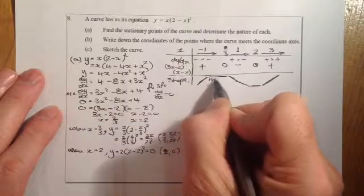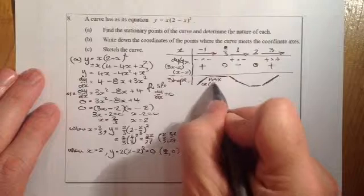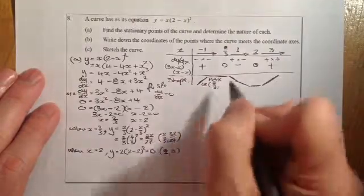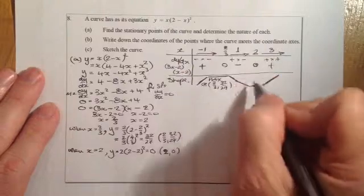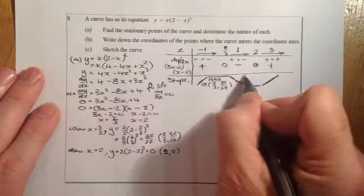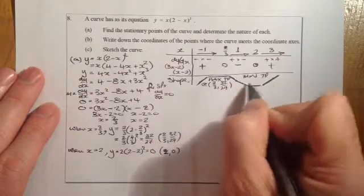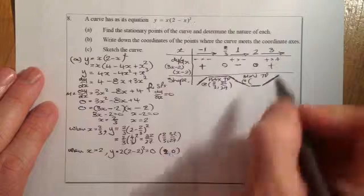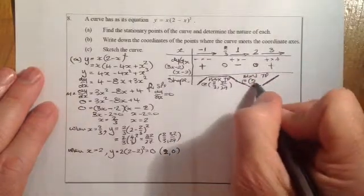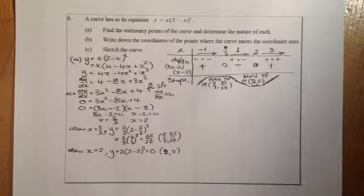So the shape of the graph is: positive going in, flat at 2/3, negative, flat at 2, then positive. This means at 2/3 we have a maximum turning point at (2/3, 32/27), and at x = 2 we have a minimum turning point at (2, 0). So there's the nature of each of them.